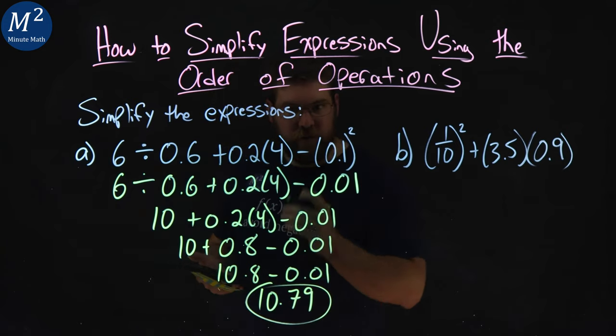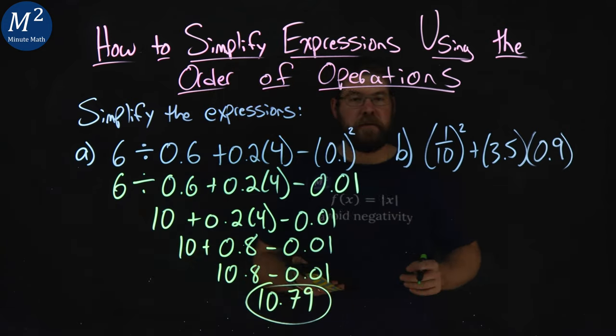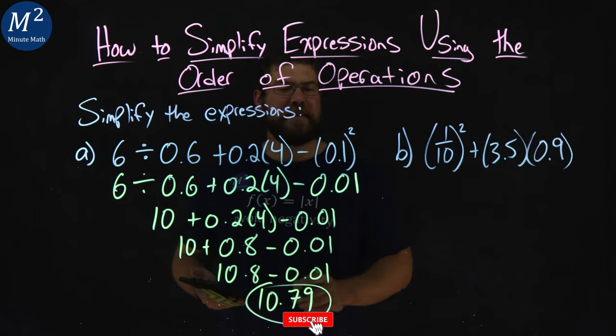All right, so we simplified our first expression, and got 10.79, not 0.09, 10.79.